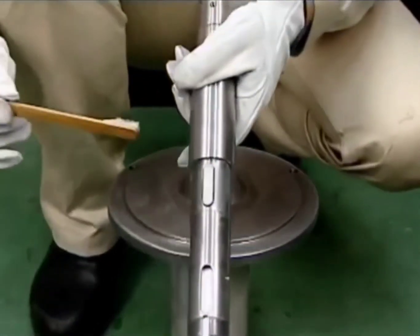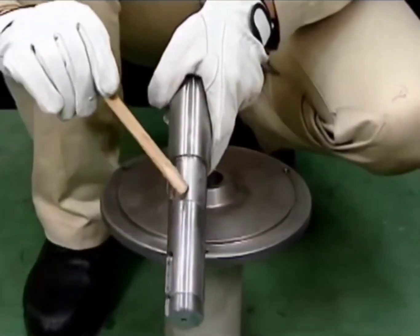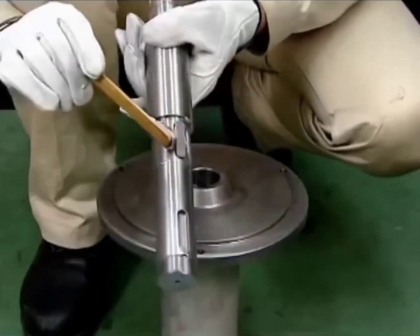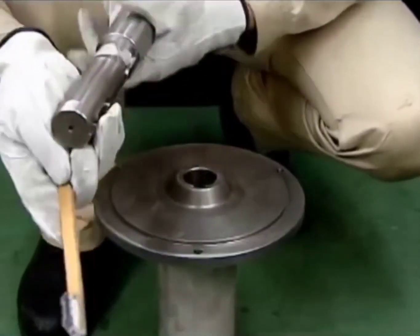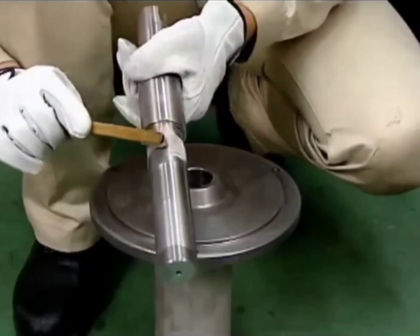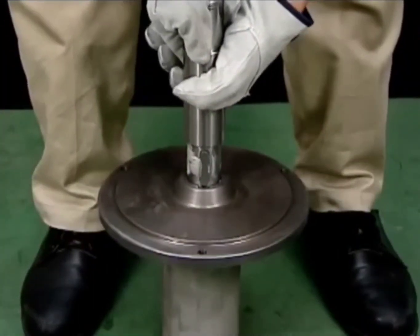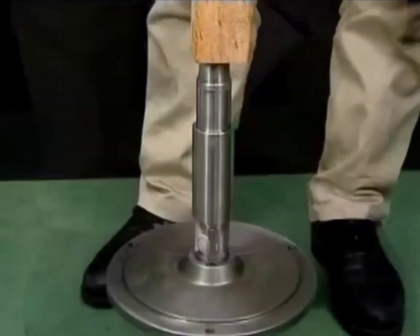Apply lubricant to the engagement part of the horizontal shaft and align with the key, then tap the horizontal shaft from the pump side. As when releasing the horizontal shaft, be sure to use a wooden slat.